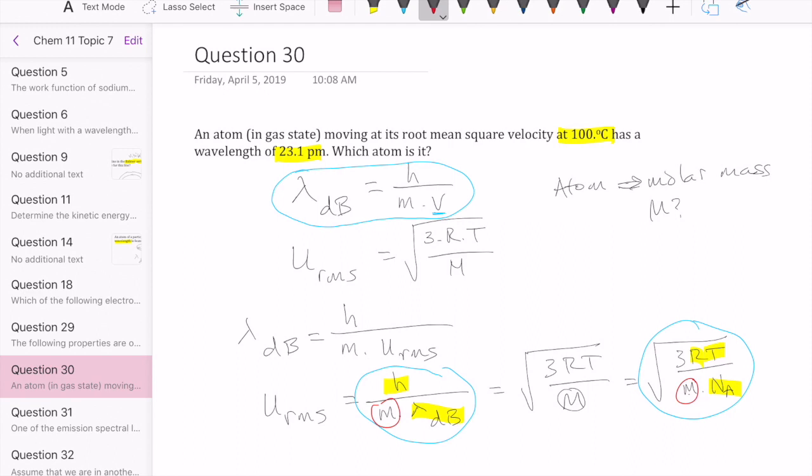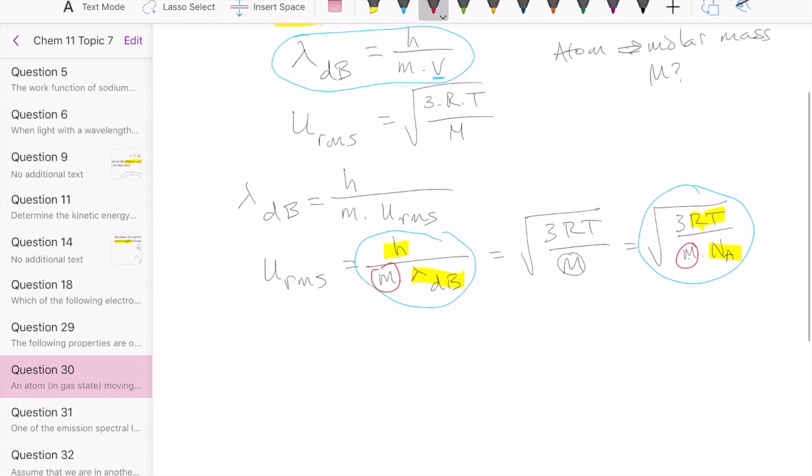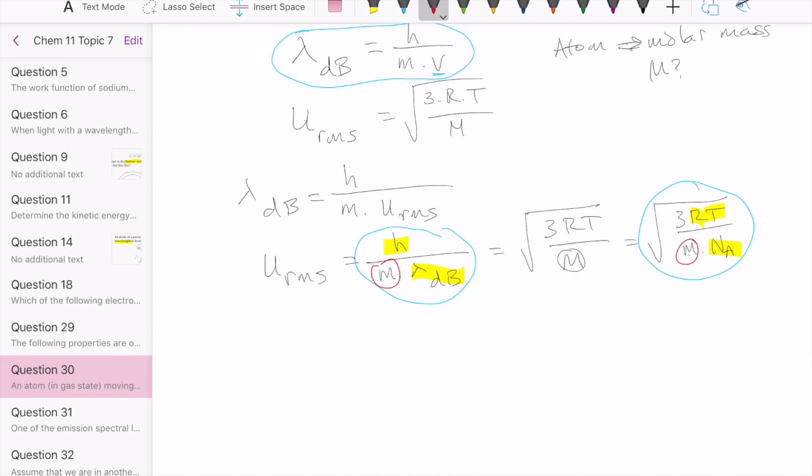And so what we can do is we can isolate the M on one side and then put all the other guys that we know on the other side and try to solve for the mass of one particle. Let's do that real quickly. This is going to be a bit of math that's involved to isolate the variable. So I'm going to write it out right here.